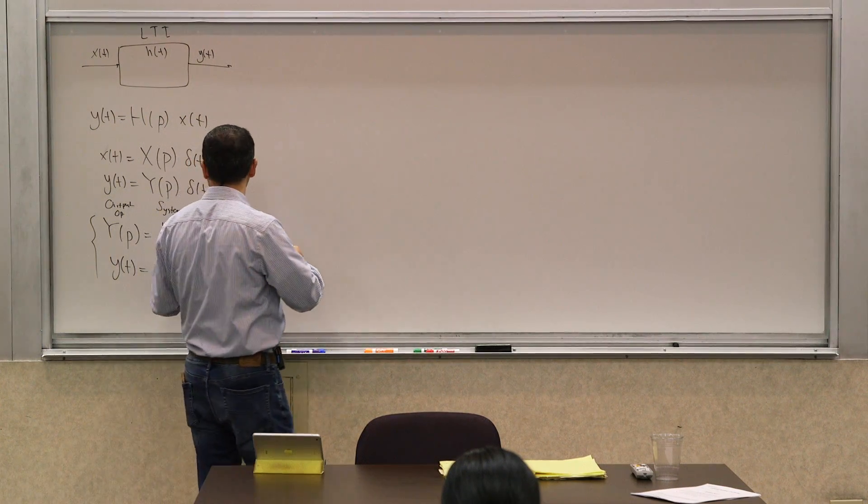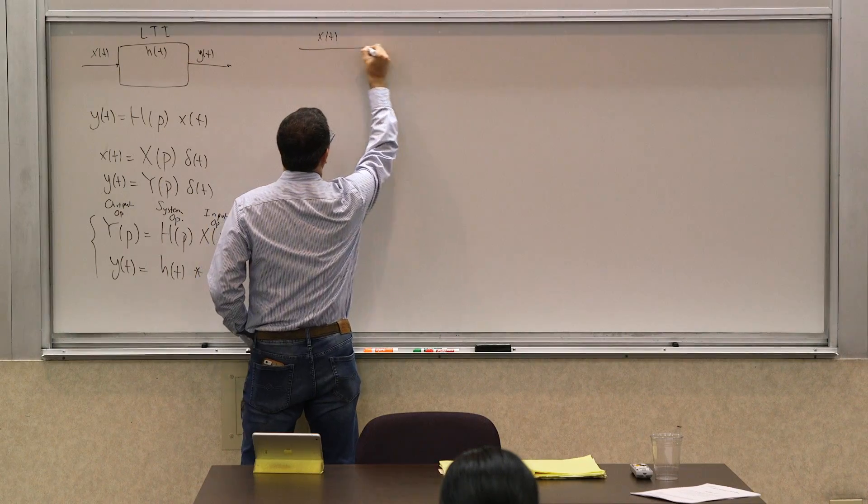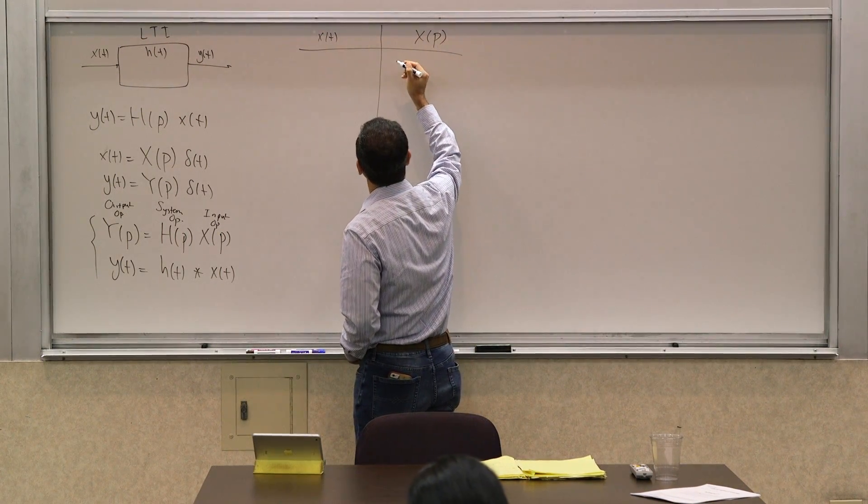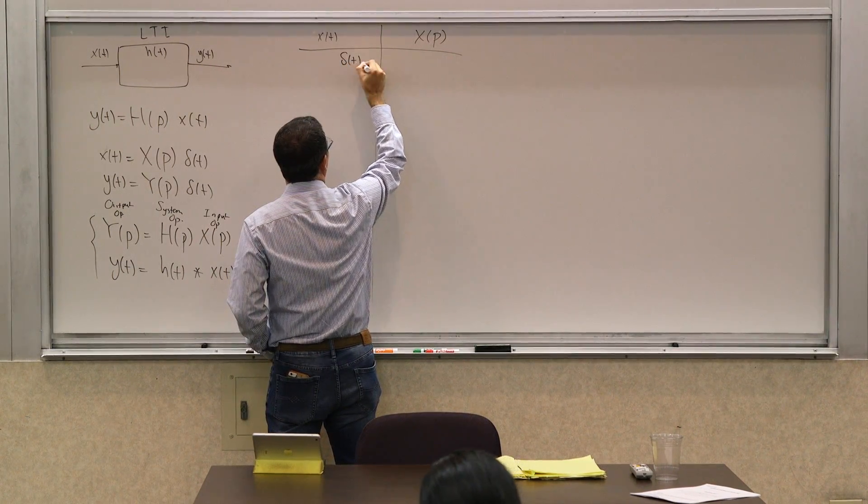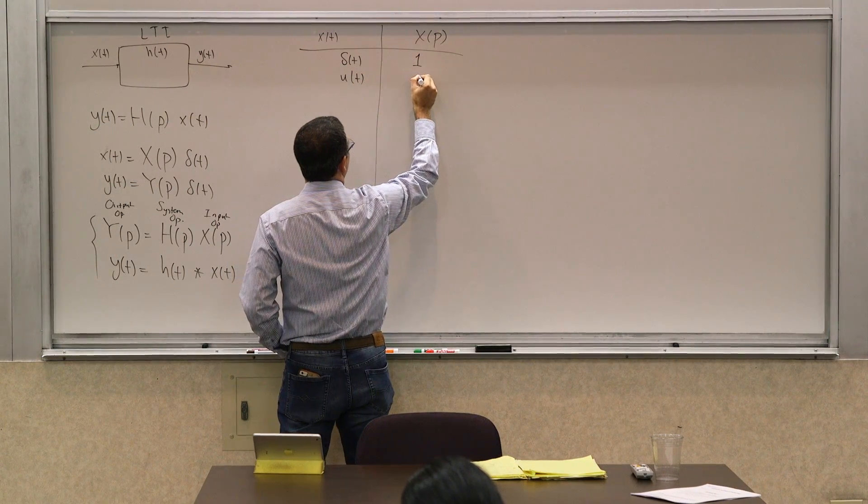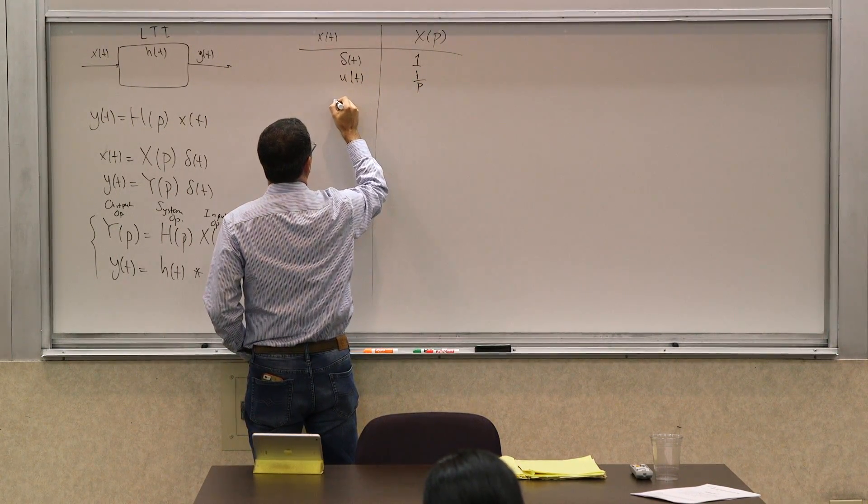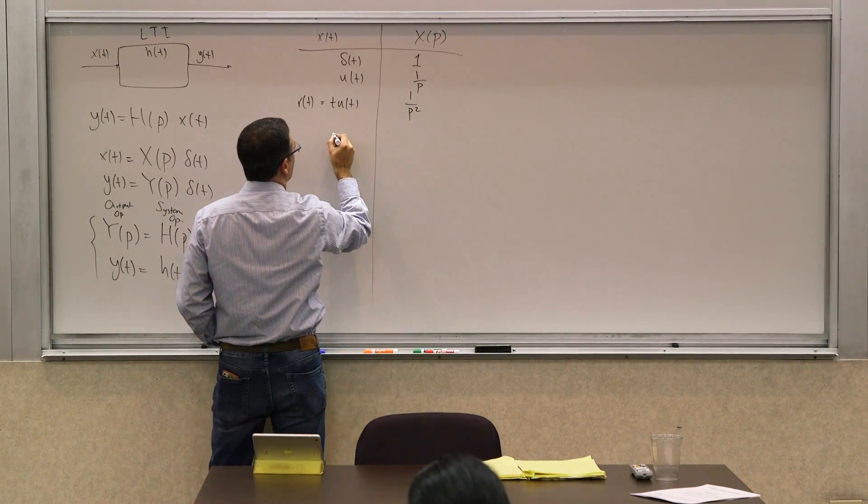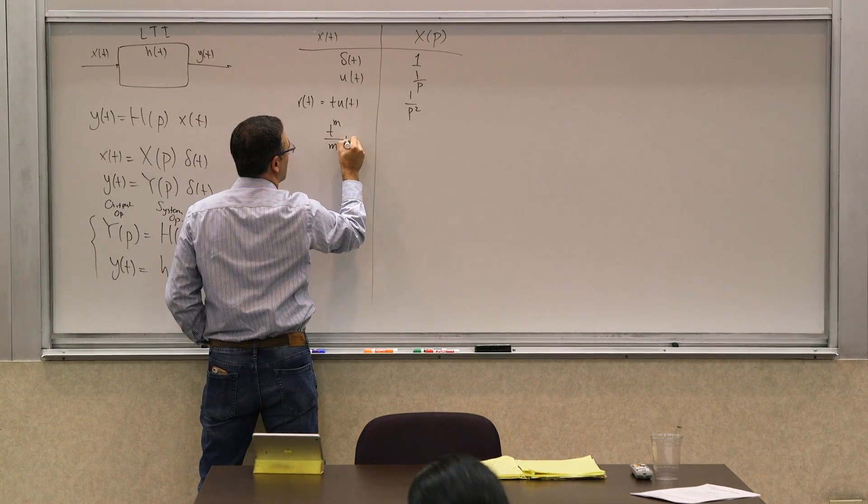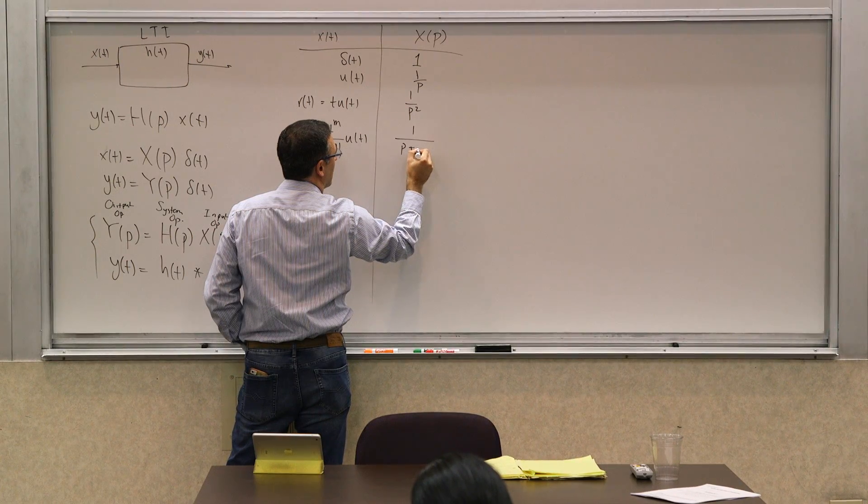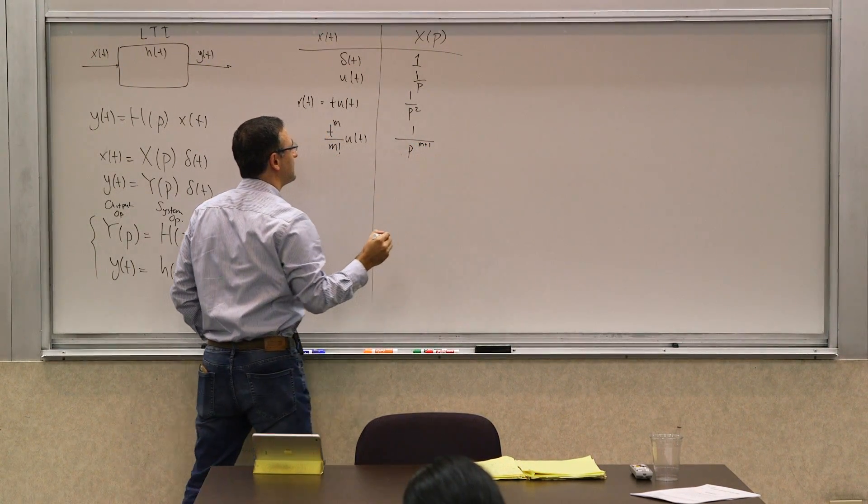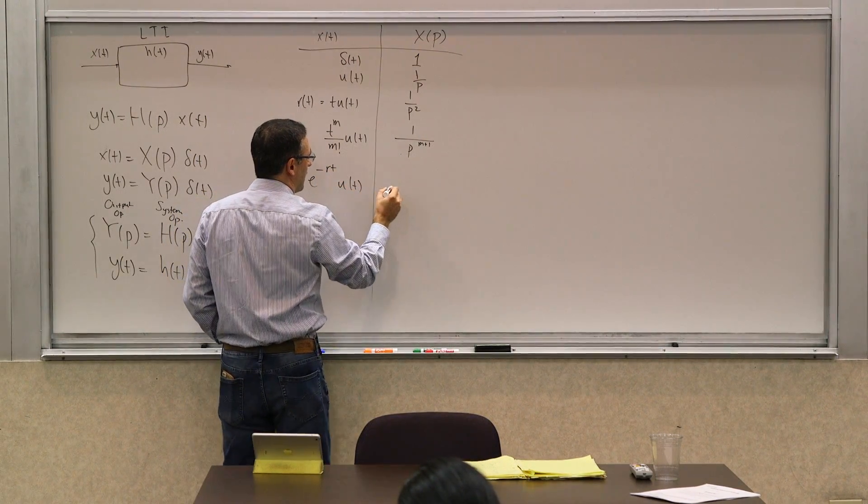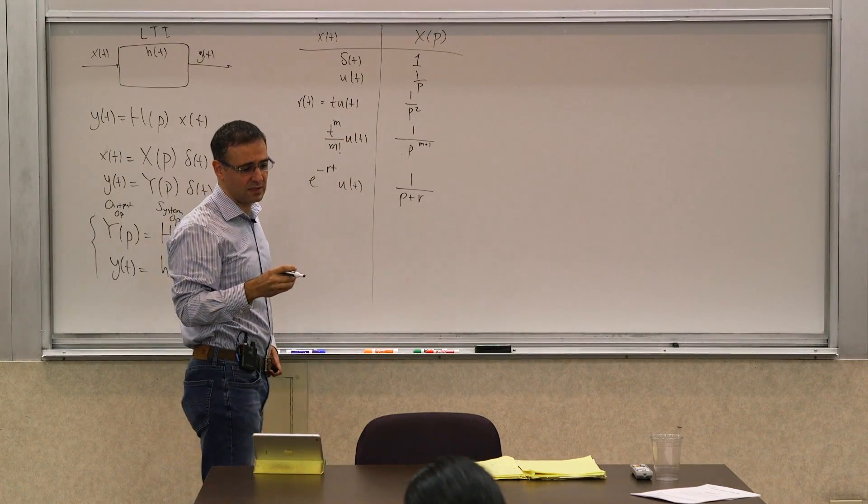The way we said we'd deal with this was to create a catalog of x of t's and their associated X of p, the operator that generates x of t off of an impulse. We saw that if x of t is delta of t, the operator is 1. If it was u of t, the unit step, the operator was 1 over p. For t u of t, also shown as ramp function r of t, is 1 over p squared. In general, we said if you had t to the m over m factorial u of t, it was 1 over p to the power of m plus 1.